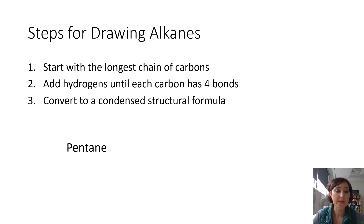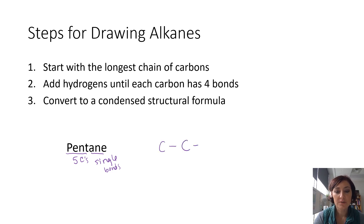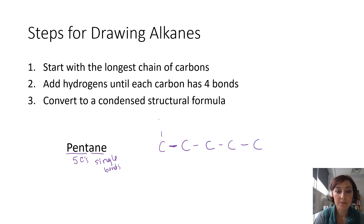Let me show you what I'm talking about. We have pentane — breaking this word apart, 'pent' means five carbons long and 'ane' tells me it's all single bonds. So I'm going to start by drawing my longest chain of carbons, which is five: one, two, three, four, five. My second step is to add hydrogens until each carbon has four bonds. This first carbon has one bond, which means it needs three hydrogens to have a total of eight valence electrons.